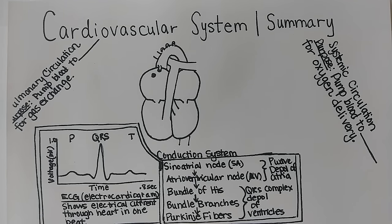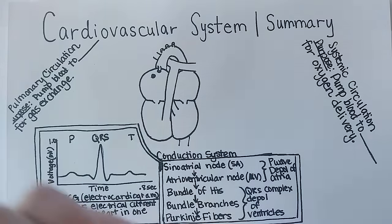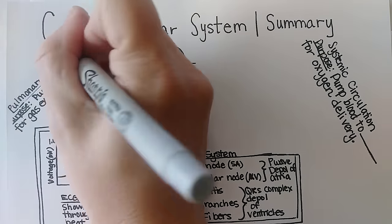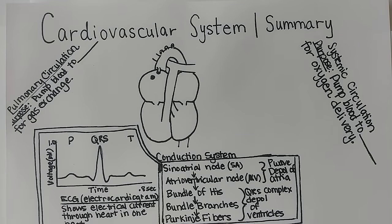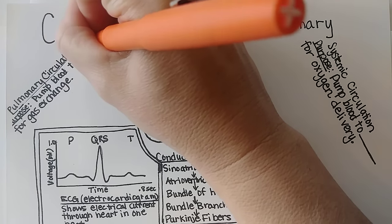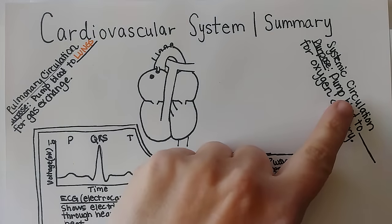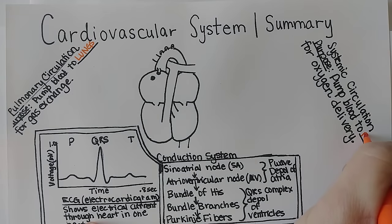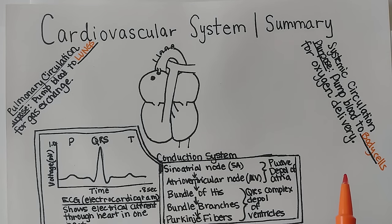Welcome to this video on the cardiovascular system summary. The goal of this video is to give you a recap of how the entire cardiovascular system works in one video. The cardiovascular system has two circulations: the pulmonary circulation, whose purpose is to pump blood to the lungs for gas exchange, and the systemic circulation, whose purpose is to pump blood to all of the body cells for oxygen delivery as well as bringing nutrients and carrying away waste.